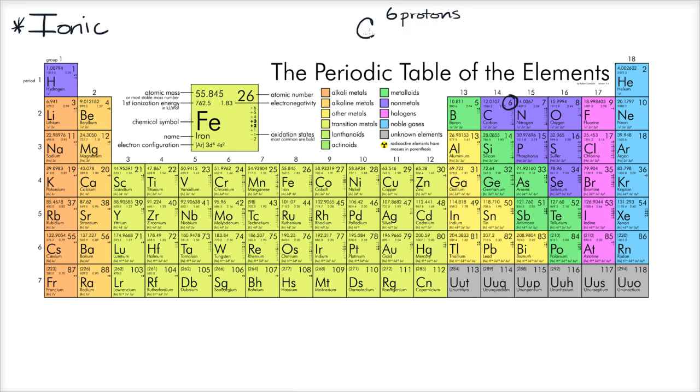And if it is neutral carbon, it is going to have the same number of electrons. It is going to have six electrons. And that's what makes it neutral. You have the six positive charges and the six negative charges.